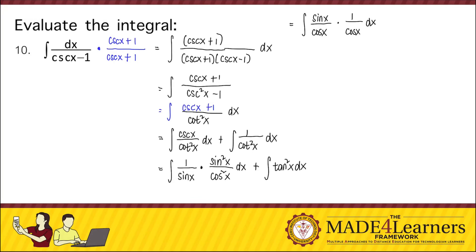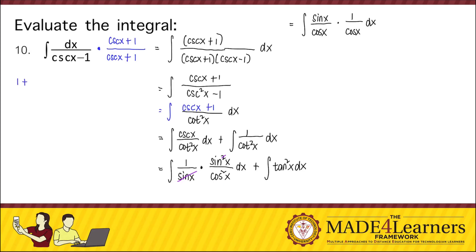Simplifying further, we have the integral of sine x over cosine x times 1 over cosine x, dx. One sine cancels, leaving sine x in the numerator with two cosine x's in the denominator. For the other term, because we do not have an integration formula for tangent squared x, we express it using the identity: 1 plus tangent squared x equals secant squared x. Therefore, tangent squared x equals secant squared x minus 1.